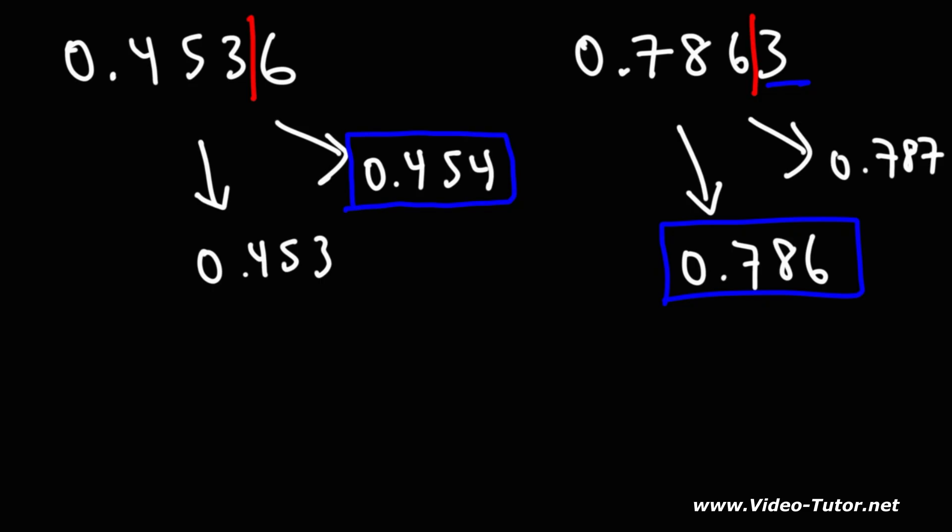So that's how you can round a decimal or a decimal number to the nearest thousandth.